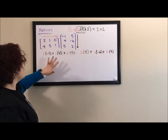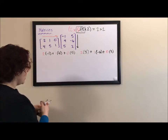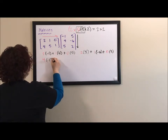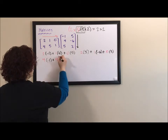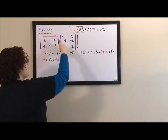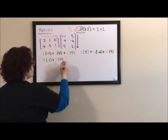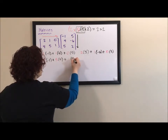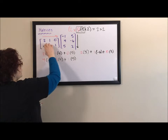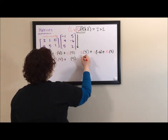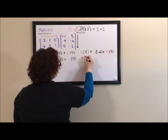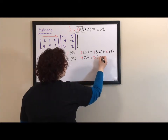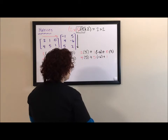Now I'm going to work on the second row — same idea. Second row, first column: I'm going to multiply the four by the negative one, plus five times four. Notice the numbers in the parentheses are the same because it's representing the first column, plus one times five. Then for the second row, second column: four times five, plus five times negative six, plus one times two.